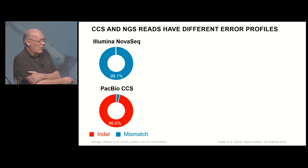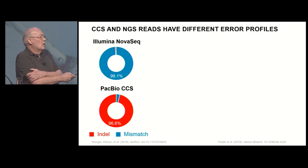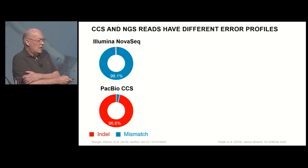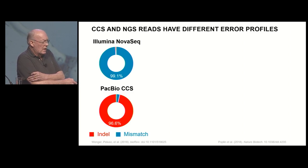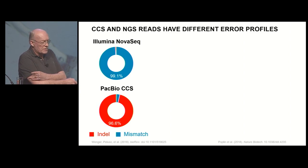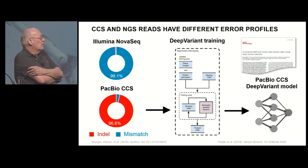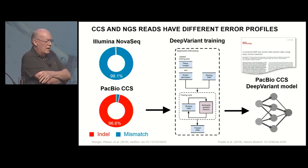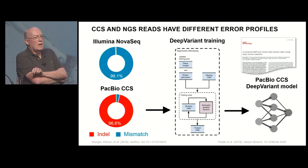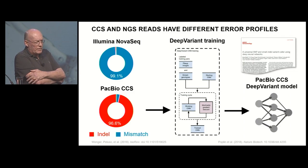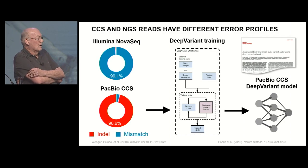What we did realize is that the error profiles between short read data and long read data can be quite different. Most of the errors you'd call discordances with short reads are mismatches, whereas the error profile for long read technologies invariably centers around short indels. Since the GATK model was really built around short reads and that error model, we wanted to look carefully at whether using a different model for processing the data would give different results. We collaborated with the DeepVariant group at Google to use their machine learning techniques to remodel the data for this.